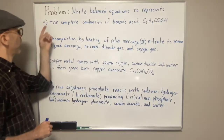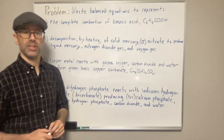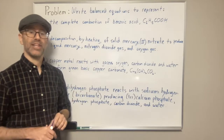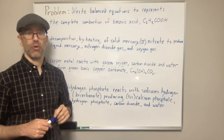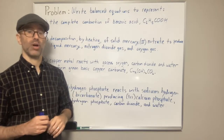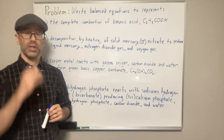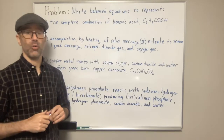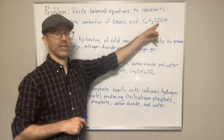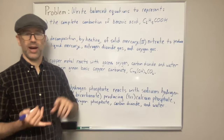In the first one we're told we have the complete combustion of benzoic acid, and they give us the formula. Complete combustion is where you are burning a substance in the presence of oxygen, and the only products formed are carbon dioxide and water. That is key. If your compound only has carbon, hydrogen, and oxygen — no nitrogen, no sulfur — then we don't have to worry about nitrogen dioxide or sulfur dioxide forming.